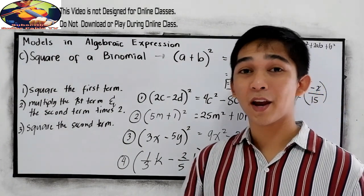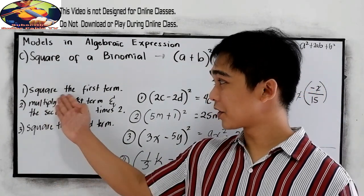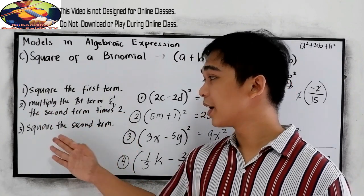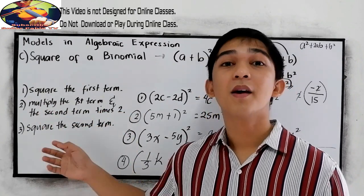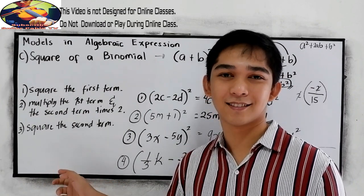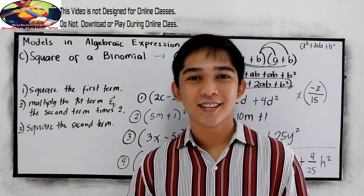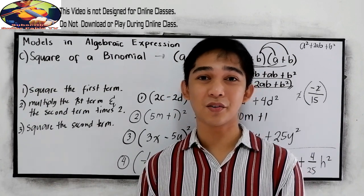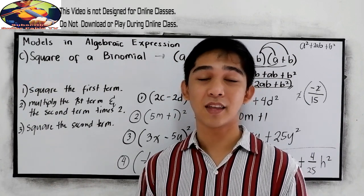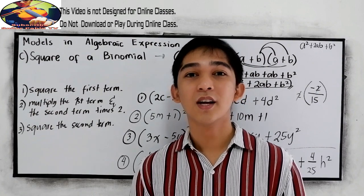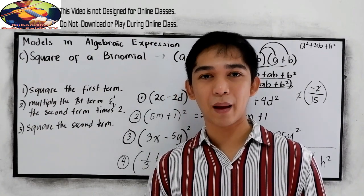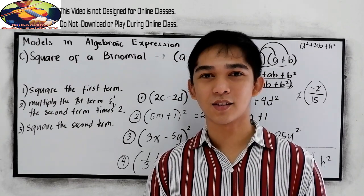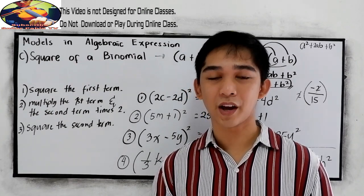So that is the square of a binomial: square the first term, multiply the first and second term times 2, and square the second term. Memorize this shortcut — you are going to need it in Grade 9, Grade 10, Grade 11, and Grade 12 for pre-calculus. Thank you for watching Senior Pablo TV. See you in our next lesson: the square of a trinomial.